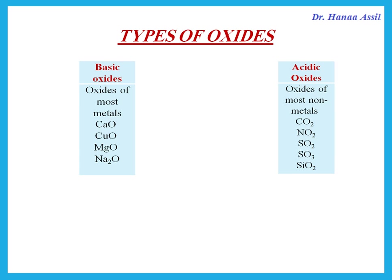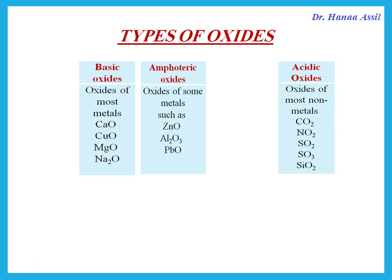Now, there are exceptions. If we say that oxides of most metals are basic, there are actually exceptions. So zinc oxide, aluminium oxide, lead oxide — these are the examples you're supposed to know. These are examples of amphoteric oxides, which means they are oxides that react with both acids and bases.